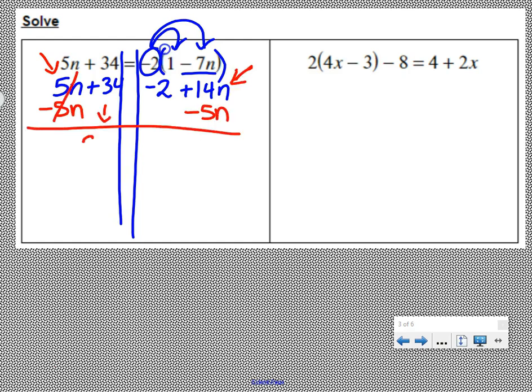Bring down the 34, equals negative two, 14n minus 5n is 9n.